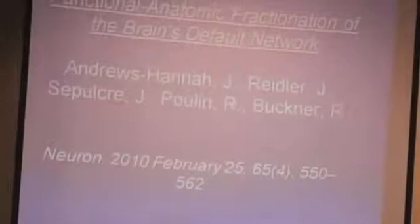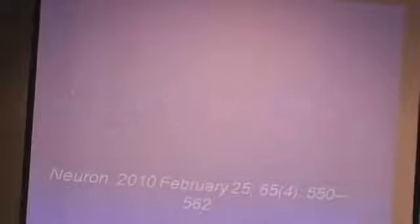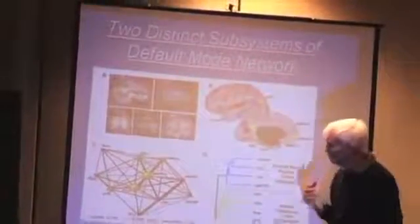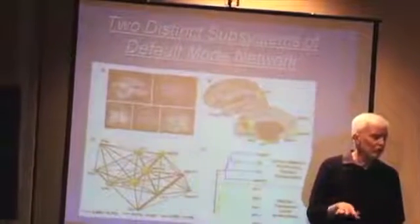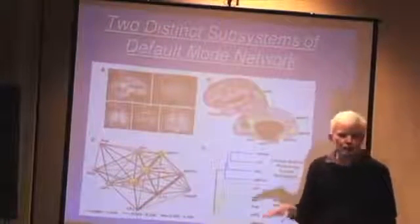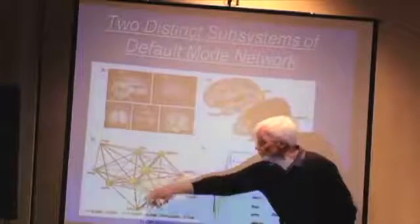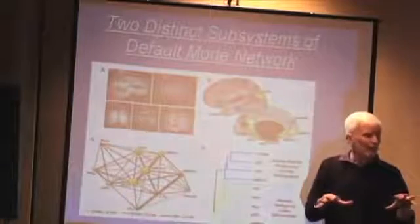The best analysis of what this default mode network is came out of a Harvard paper in 2010, in Neuron, by Andrews Hanna. What they found out, there were many other cuts at this, but what they came up with was that there are two main centers of an 11-center network that constitute this default mode network. A big sample size, 145 people, so high accuracy, high correlation coefficients. These two centers, this posterior cingulate cortex and the medial prefrontal cortex, are the two cores. Outside of that, there are two other sub-networks of nine cores.